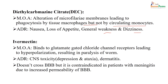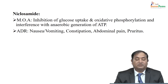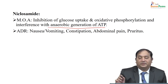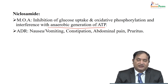Ivermectin binds to glutamate-gated chloride channels leading to hyperpolarization, causing paralysis of the worm. ADRs include CNS toxicity — depression, ataxia, and dermatitis. Though this drug does not normally cross the blood-brain barrier, in case of meningitis with inflammation of meninges, permeability is altered and it can cross — so it should not be prescribed during meningitis. Niclosamide inhibits glucose uptake and oxidative phosphorylation, ultimately interfering with anaerobic generation of ATP — acting as an antihelminthic. Patients commonly report nausea, vomiting, constipation, abdominal pain, and pruritus.